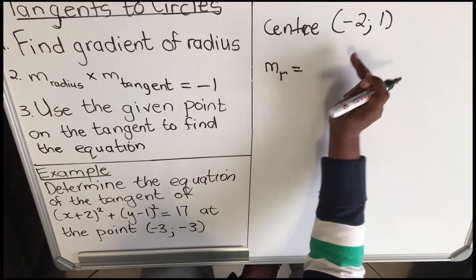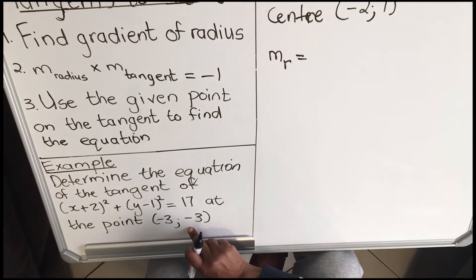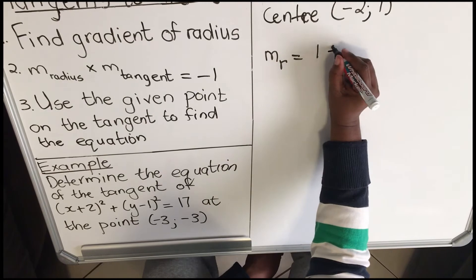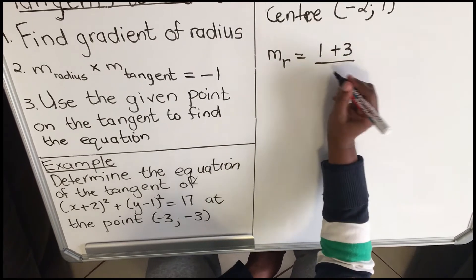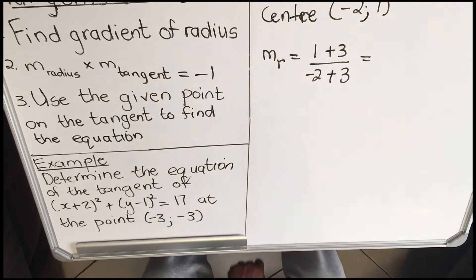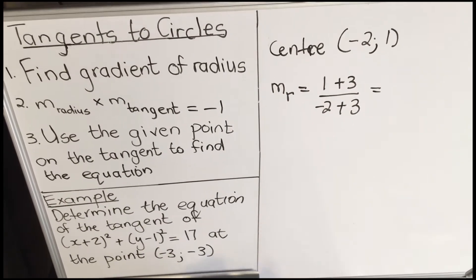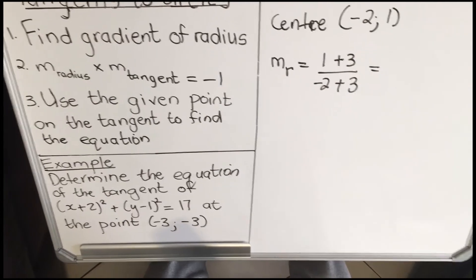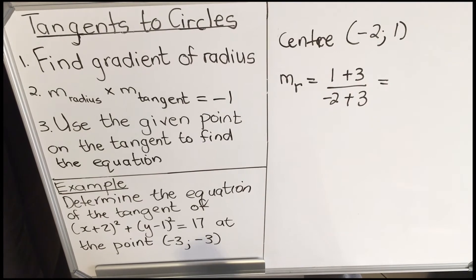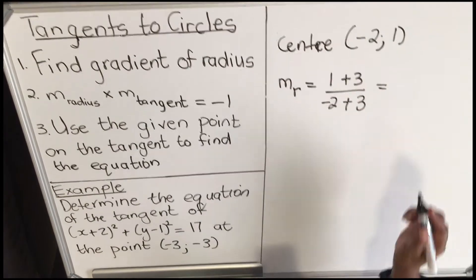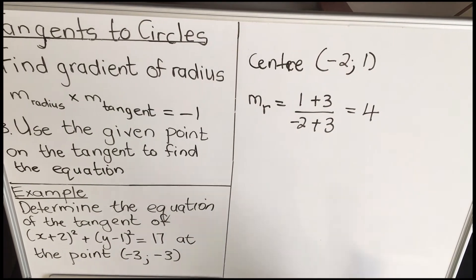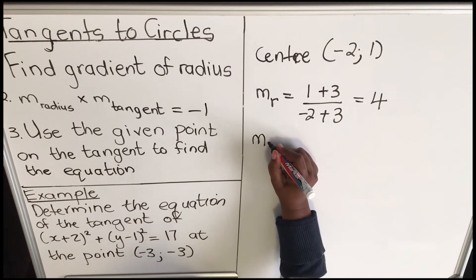Now you can find the gradient of the radius. You're going to use the center coordinate and the point on the tangent, so you have: (1 − (−3)) over (−2 − (−3)). Use your calculator as much as you can so that you don't make mistakes. Your answer is 4, so the gradient of the radius is 4.